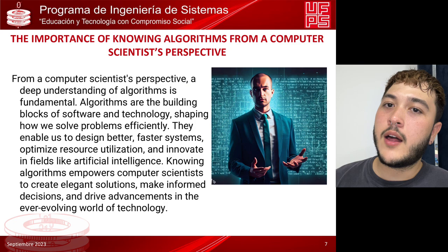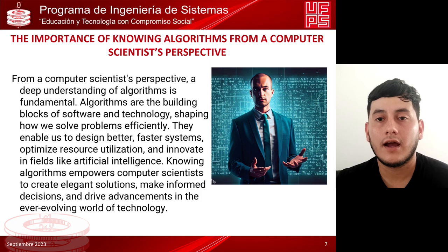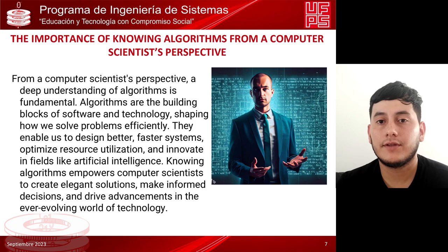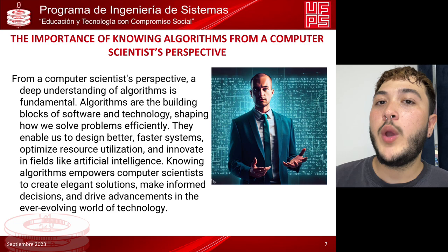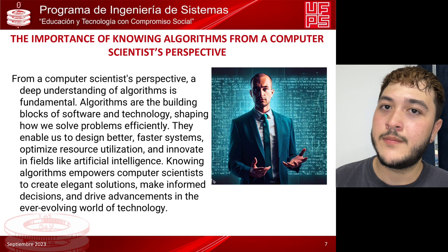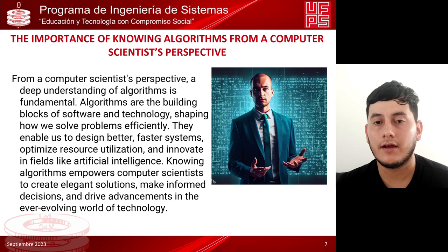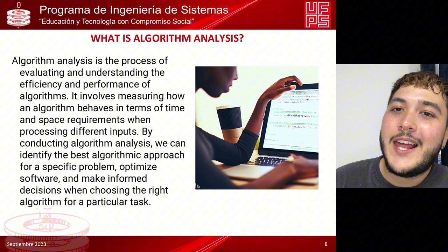Continuing with our topic, let's now talk about why it is essential to know algorithms from a computer scientist's perspective. Knowing algorithms not only helps you solve problems effectively, but also improves the efficiency of your applications. For example, when we need to sort a list of elements like names in a database, we can choose from different sorting algorithms. By knowing the algorithms, we can select the most suitable one for our case, saving processing time. Understanding algorithms from a computer science perspective is fundamental for efficiency, making informed decisions, and the ability to creatively solve problems.